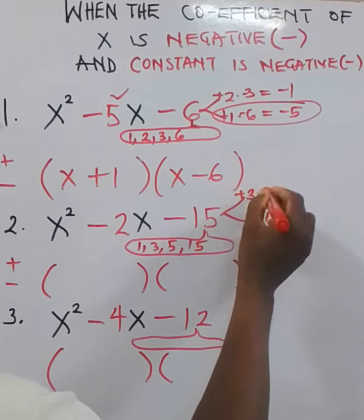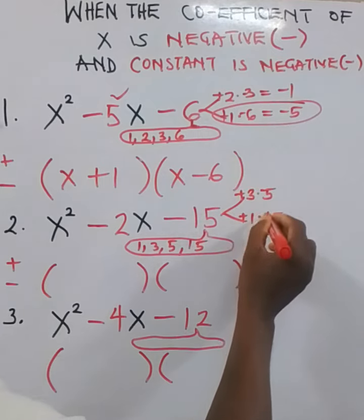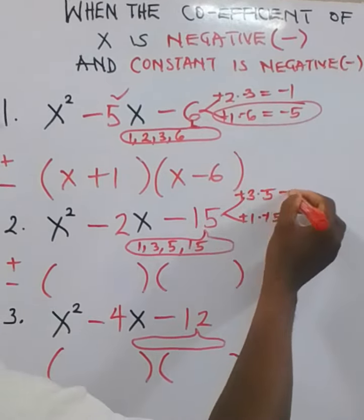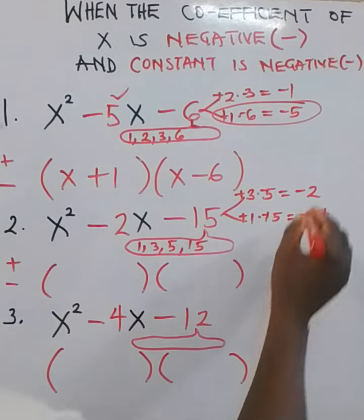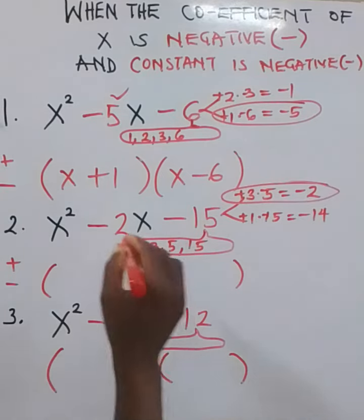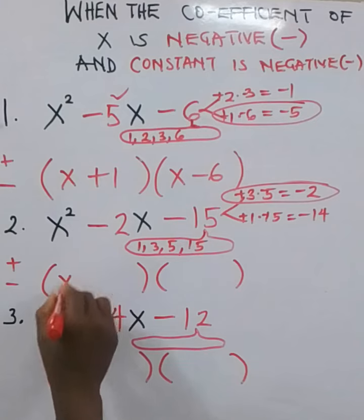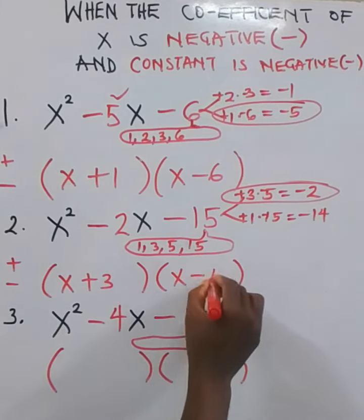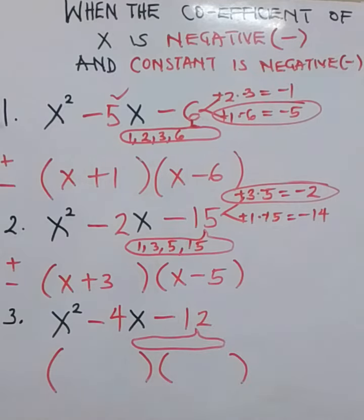Let me apply positive, negative, positive, negative. Plus 3 minus 5, that'll give me minus 2. Plus 1 minus 15, that'll give me minus 14. We satisfy. That means the first one will go. So that means what are the first one? x plus 3, x minus 5. I've been able to factorize this.